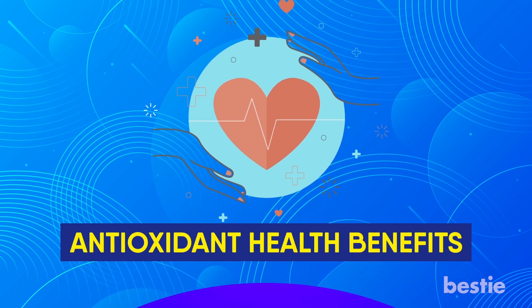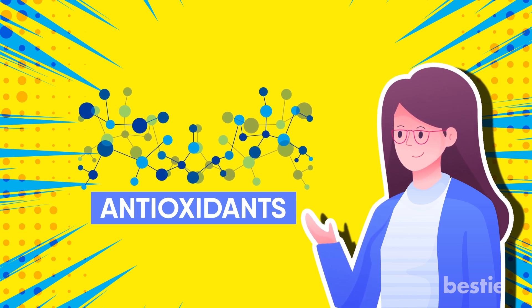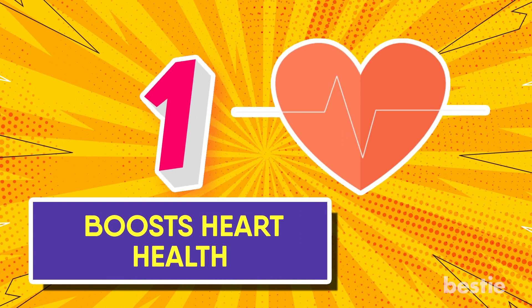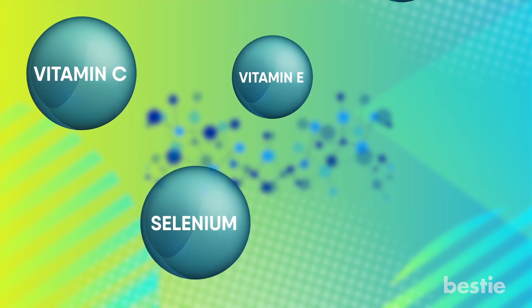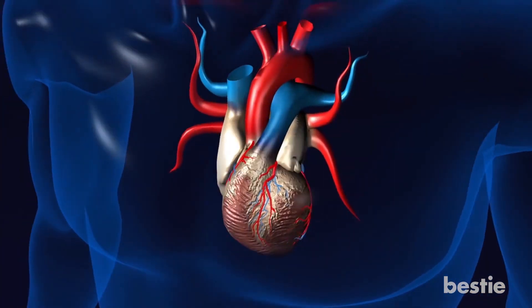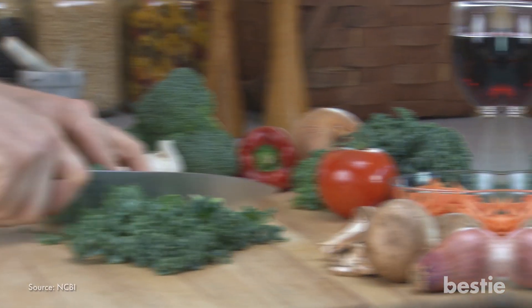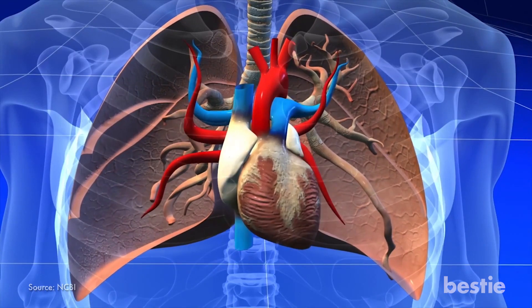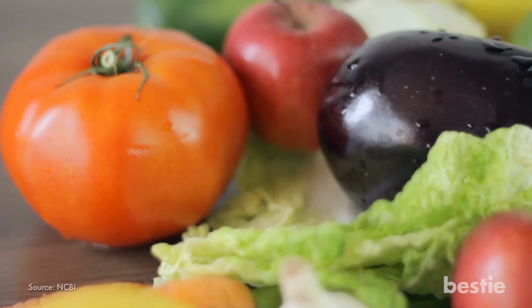Now let's talk about antioxidants' tremendous health benefits. First, they boost heart health. Antioxidants like vitamin C, E, selenium, copper and zinc have powerful cardio-protective activity. It's been found that adequate vitamin C intake can cut the risk of stroke by as much as 50%. Hundreds of studies state that intake of plant-based diets loaded with fresh fruits and vegetables can protect the heart and prevent cardiovascular issues, and fruits and veggies are loaded with antioxidants.